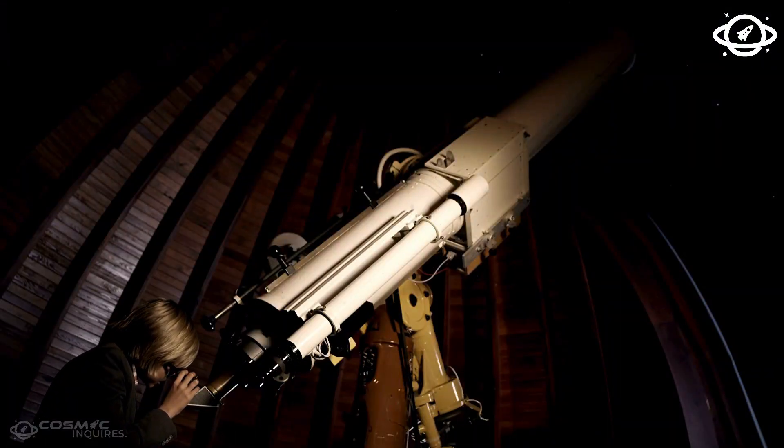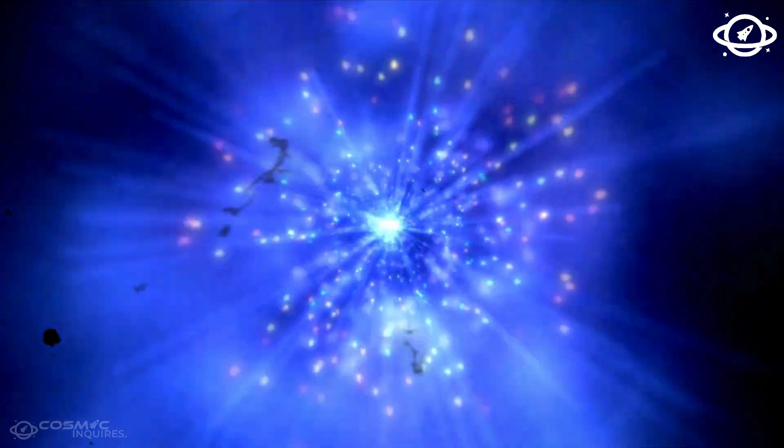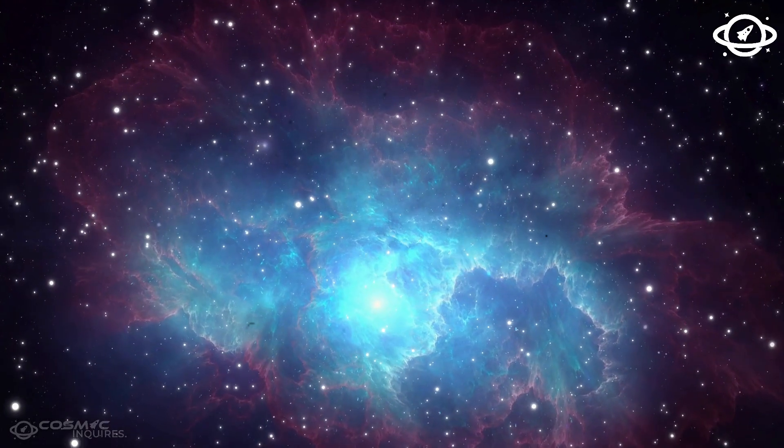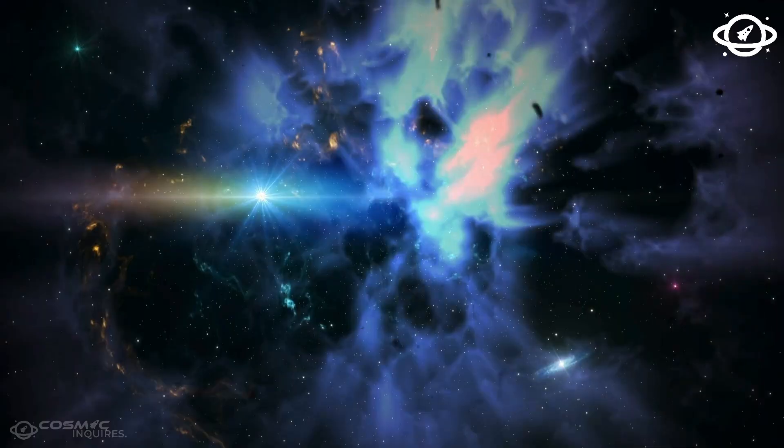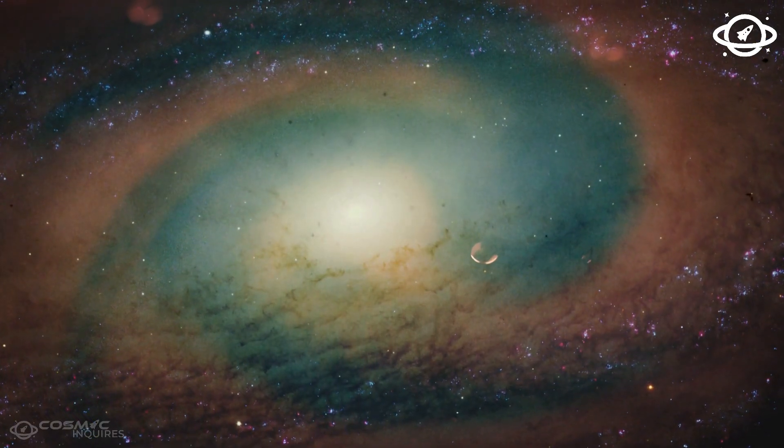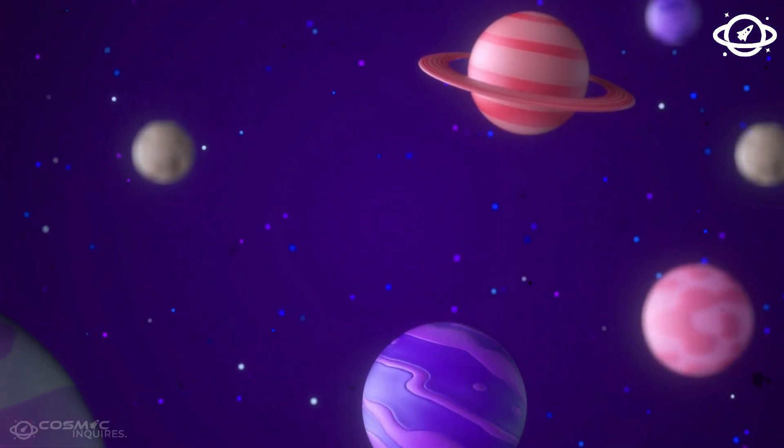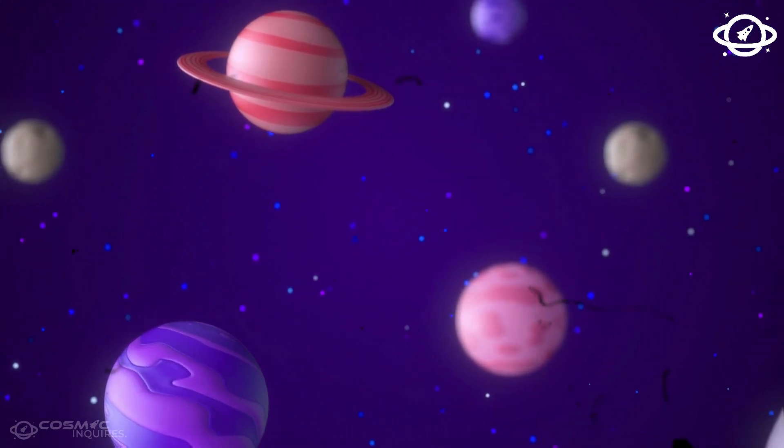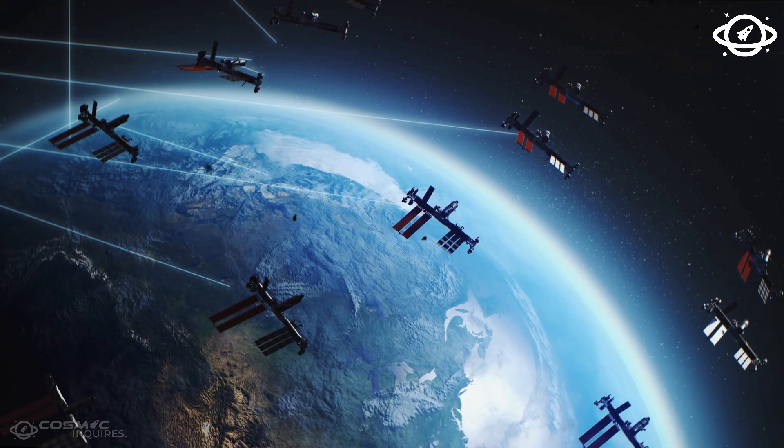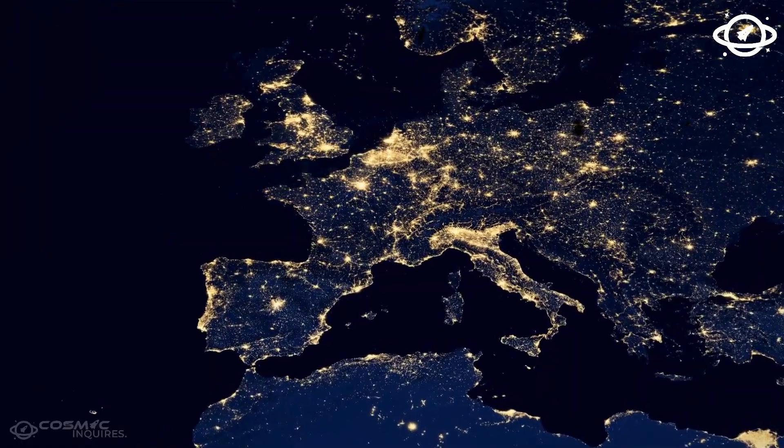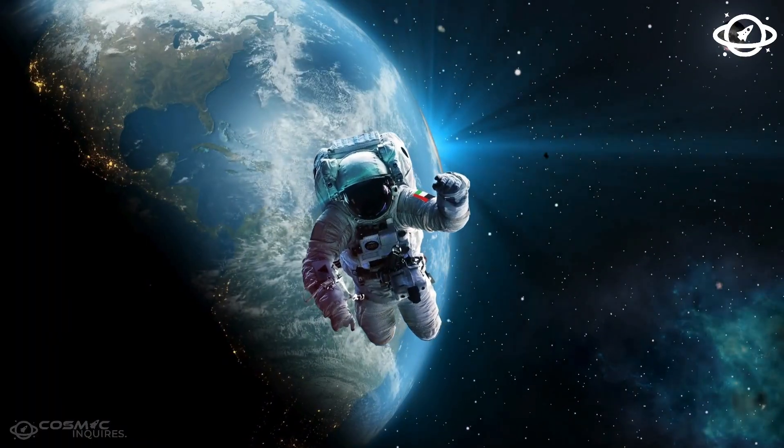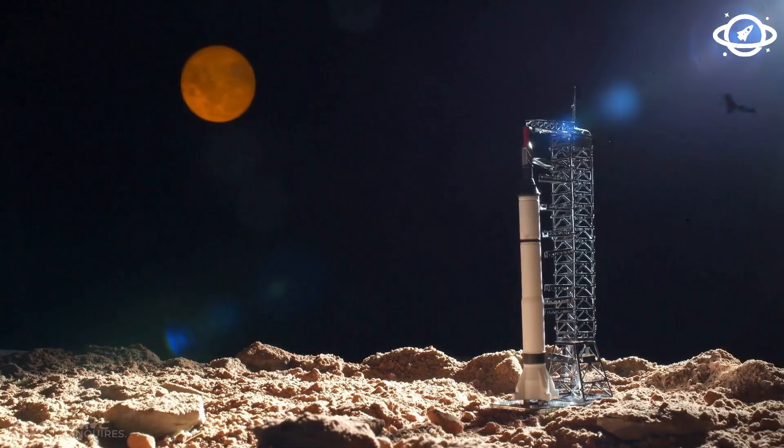When Neil deGrasse Tyson took the stage to explain what the James Webb had uncovered, the room fell into a silence, not of awe, but of alarm. Because beneath Neptune's familiar blue swirl lies an internal structure unlike any other planet we've ever studied. Layers that don't obey the laws of density or pressure, thermal zones that generate heat without any solar input. In short, Neptune behaves like a machine with a broken blueprint, or one running on a set of physics we haven't discovered yet.